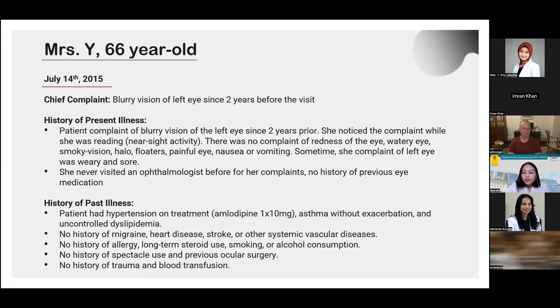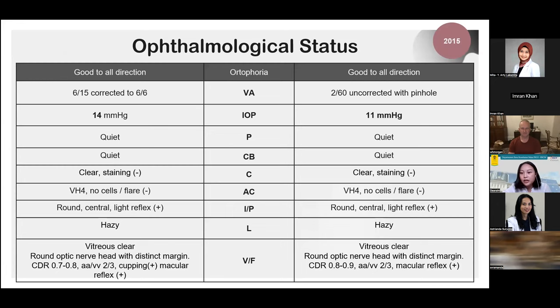She denied any allergies, long-term steroid use, smoking, or alcohol consumption. She had never worn spectacles before, and there was no previous ocular surgery, trauma, or prior blood transfusion. During general screening, blood pressure was around 140/90 mmHg. Her best corrected visual acuity was 6/6 in the right eye and 2/60 in the left eye. Initial intraocular pressure was 14 mmHg in the right eye and 11 mmHg in the left eye.